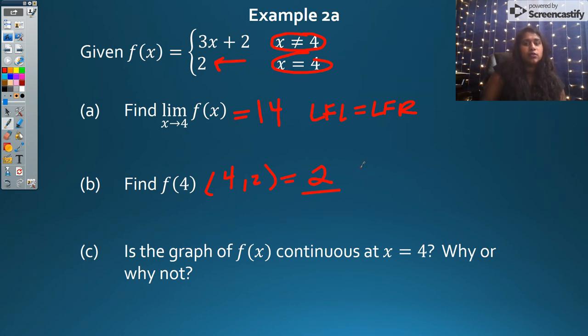So let's go through my formal definition of continuity. The formal definition of continuity tells me as x approaches some c value, then that function at c has to be equal. So let's plug in our c value. Our c value is 4. So as x approaches 4 of f(x), the function value of 4. Well, does 14 equal 2? No, it does not. So is my graph continuous? No, it is not continuous because...